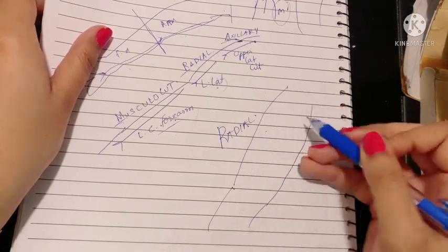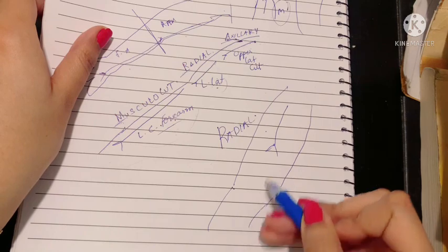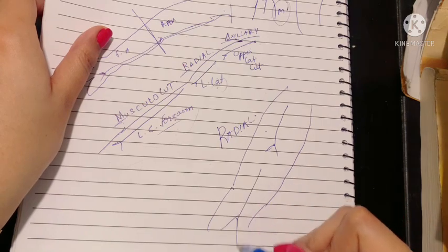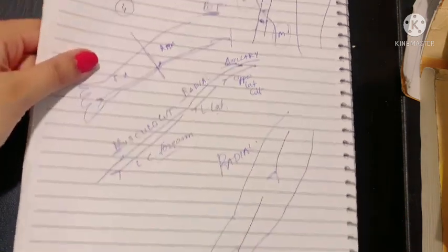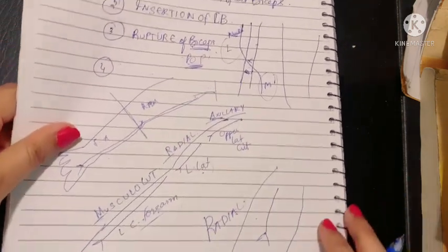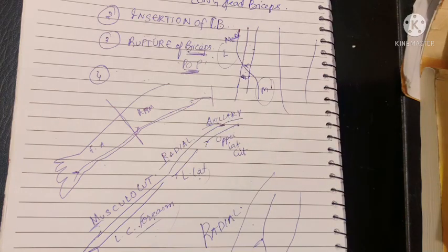The radial nerve, being a posterior-sided nerve, gives the posterior cutaneous nerve of the arm and the posterior cutaneous nerve of the forearm. You should be very clear about which nerve gives which branch.